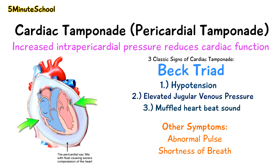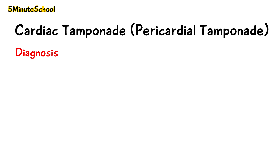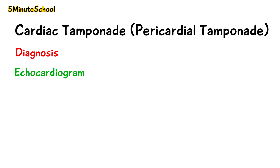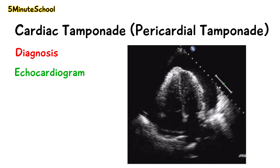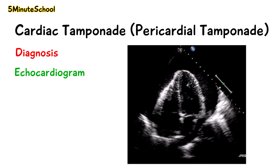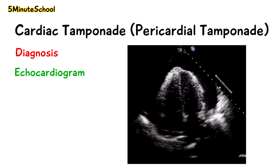Other typical symptoms of cardiac tamponade include shortness of breath and abnormal pulse. To confirm the diagnosis, ECGs can be done, which may show sinus tachycardia, low voltage QRS, and electrical alternans. Most commonly, echocardiograms — a type of ultrasound — are used to confirm the diagnosis and show the exact location and amount of fluid build-up.